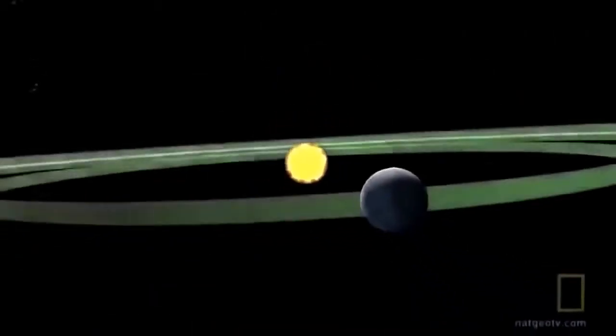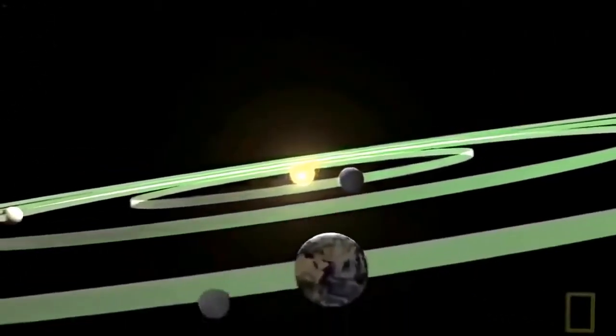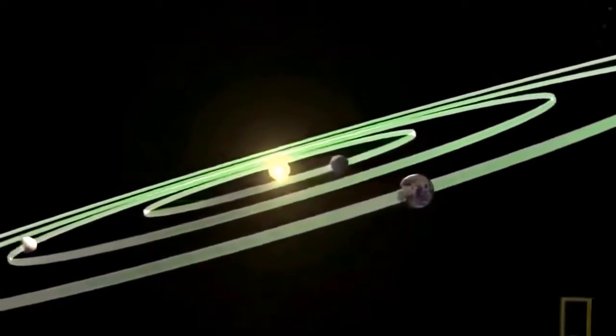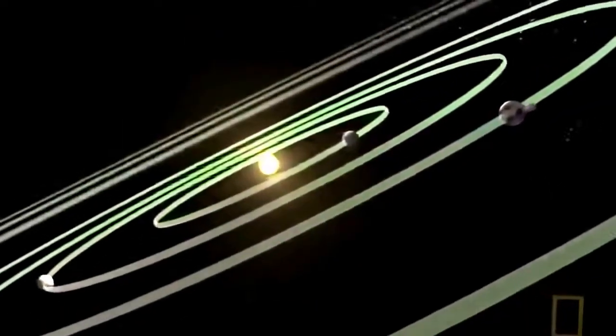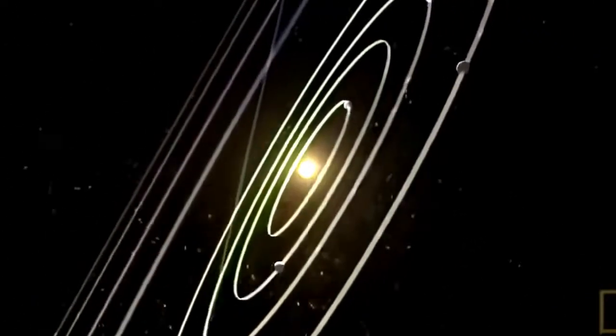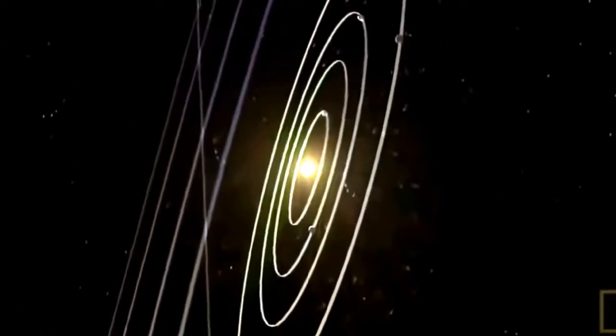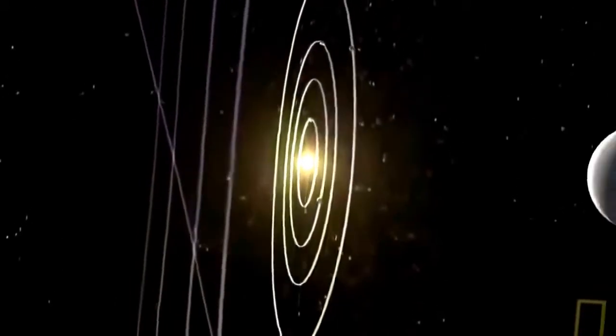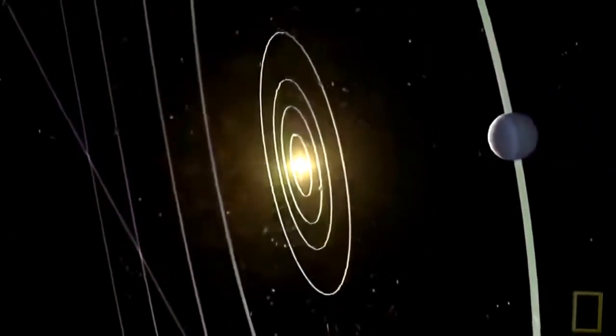Earth's sun warps space similarly to a black hole, only it's a cosmic wimp by comparison. The gravitational pull of our sun is much weaker. Earth and all its nearby planets are trapped by the sun's pull, but it's so mild that it just stays in orbit without being sucked into the sun.